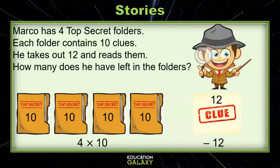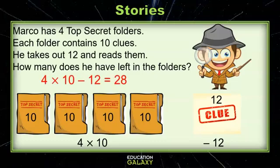4 times 10 is going to be the first part of our equation. Then he takes out 12 and reads them, so we're going to subtract the 12 that he takes out. Therefore, our equation says 4 times 10 minus 12, and that gives us a total of 28. So he has 28 left in the folders.